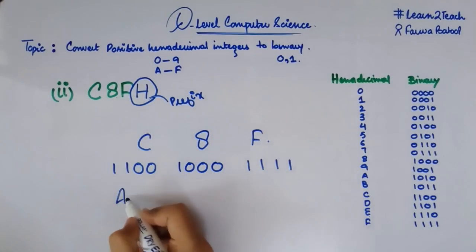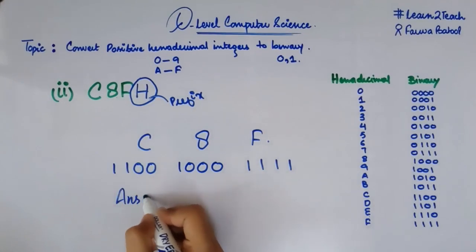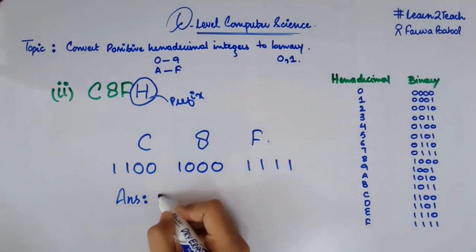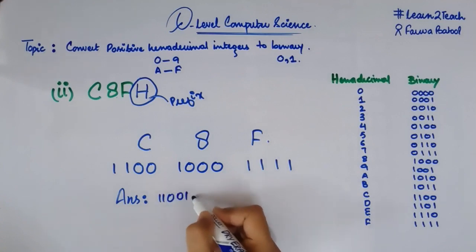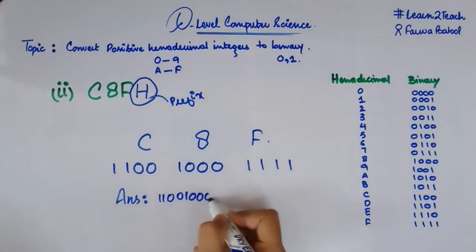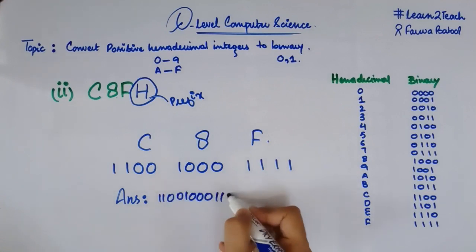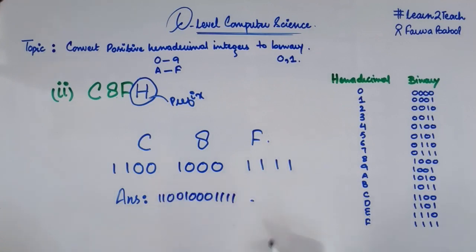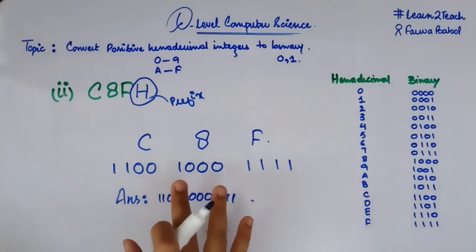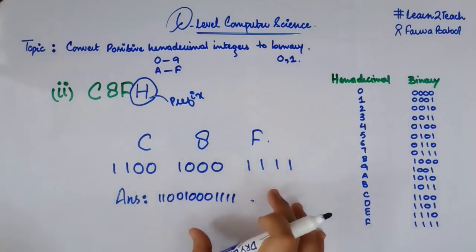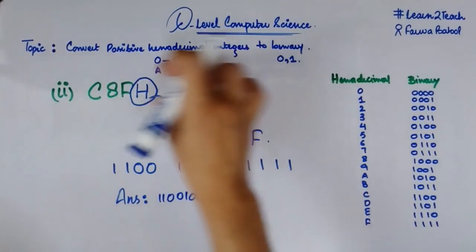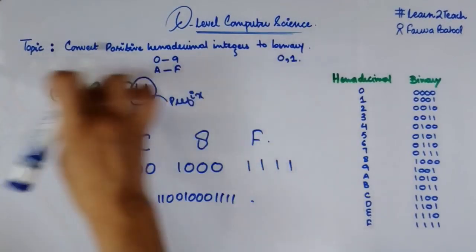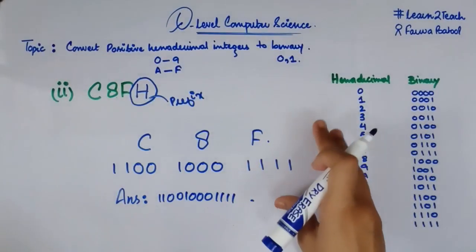Collectively, the final binary answer for the hexadecimal number C8F is 1100 1000 1111. This is the required binary number for this hexadecimal example.